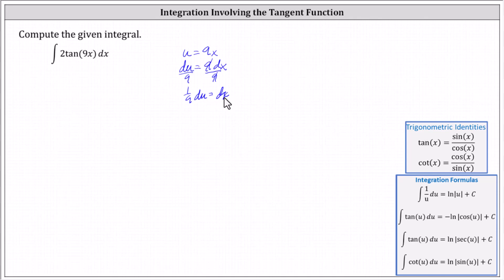Now let's write the integral with respect to u. Let's begin by factoring out the two. Because u equals nine x, we have tangent u. We already factored out the two, and therefore we're left with dx. And dx equals one ninth du. Let's factor out the one ninth, and then we have du.